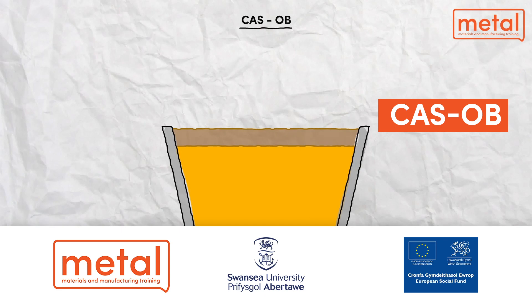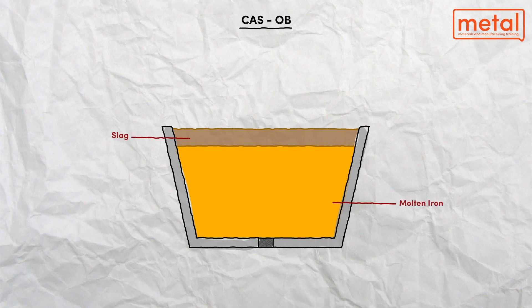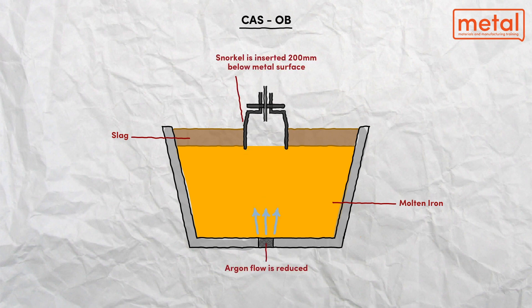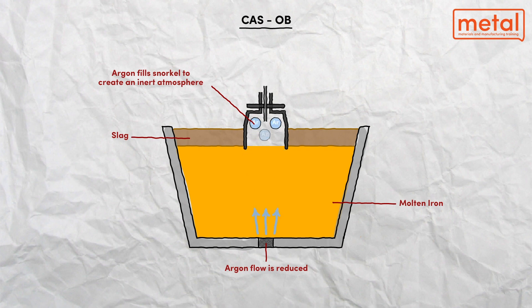The CAS-OB (composition adjustment by sealed argon bubbling with oxygen blowing) process was developed in the 1980s by Nippon Steel Corporation. The objective of the CAS-OB process is to homogenize and control the steel composition and temperature. The process is commonly divided into three stages: heat up, alloying, and reduction of slag.